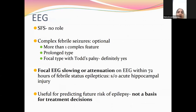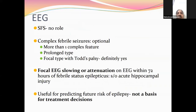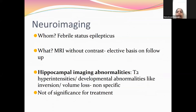EEG is particularly indicated when the seizure is prolonged, focal in nature, or with persisting focal neurological deficit with Todd's palsy. EEG in febrile status epilepticus shows focal EEG slowing or attenuation, suggesting hippocampal injury. EEG is useful for predicting future risk of epilepsy but should not be used as the basis for treatment decisions. It mainly helps recognize epilepsy-related syndromes.